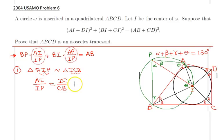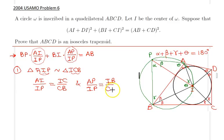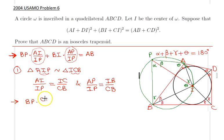Once we substitute these quantities into the expression, the equality conditions from the previous page simplify to: BP · CI/BC + BI² / BC = AB.